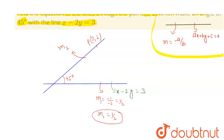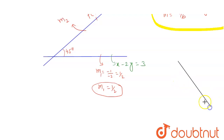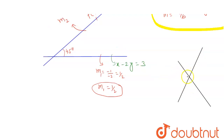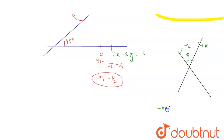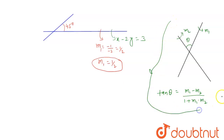There is another concept: if you have two lines making an angle theta with each other, having slopes m1 and m2 respectively, then tan(theta) equals m1 minus m2 upon 1 plus m1 times m2. We will use this concept to find the slope m2 of the required line.